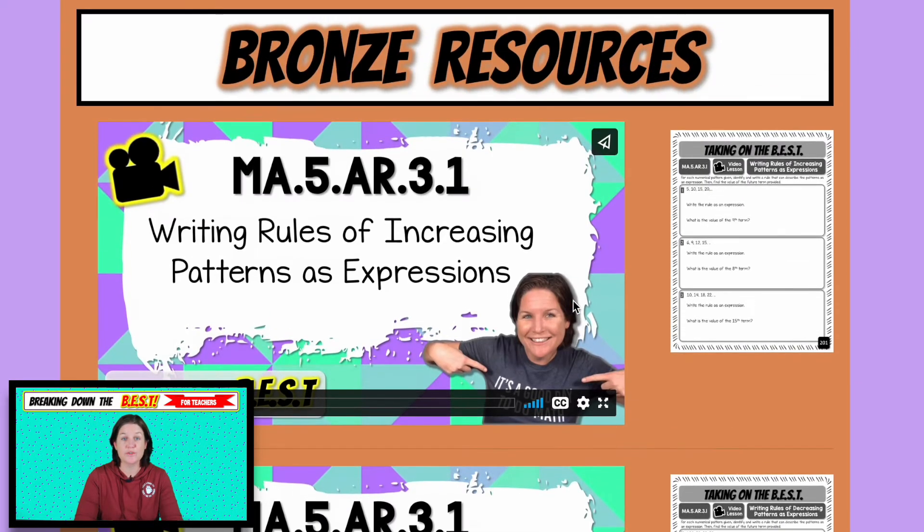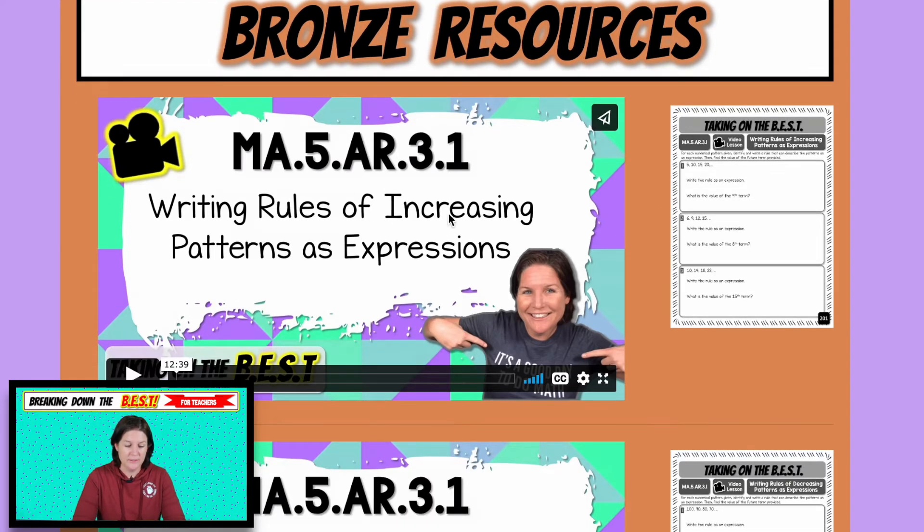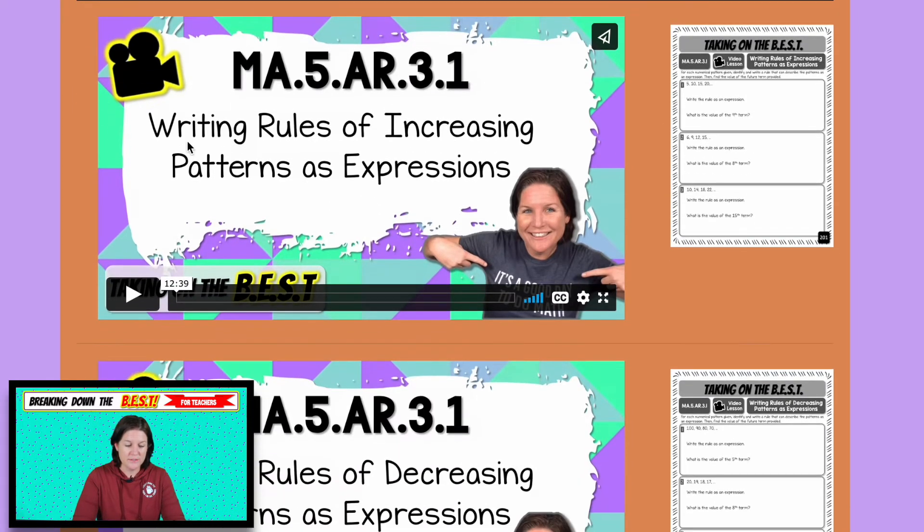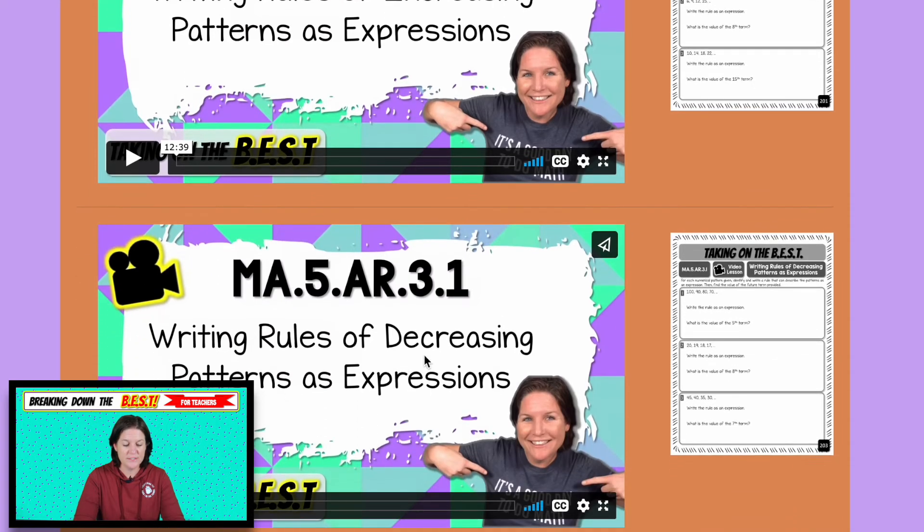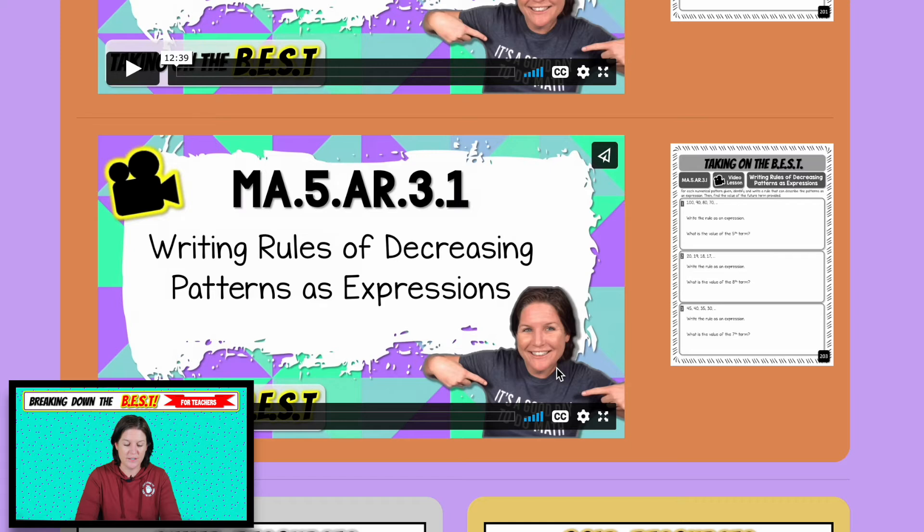So we have two video lessons for your bronze resources. If you're a bronze, silver, or gold member, you have access to these video lessons right here. The first video lesson is writing rules of increasing patterns as expressions. And then you just have this document right there. The second video lesson, we have decreasing patterns as expressions, and we have your printable right there.